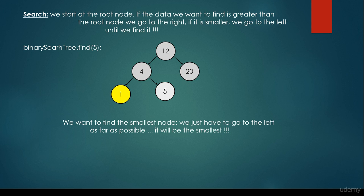What if we would like to find the smallest node? We just have to go to the left as far as possible, and it will be the smallest item. Because this is how binary search trees are defined — the left subtree is smaller than the root node, the right subtree is greater than the root node. So if we go to the left as far as possible, it's going to be the smallest item in the binary search tree.